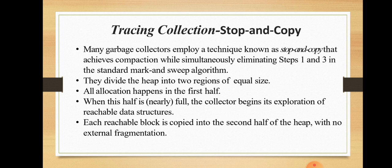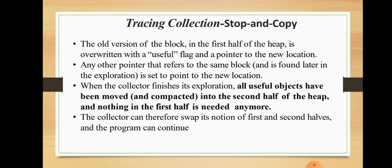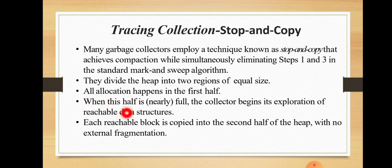In stop-and-copy, we divide the heap into two equal regions. All allocation happens in the first half, meaning all allocations are completed in the first half, while the second half remains unused. When the first half is full or nearly full, the collector begins its exploration of reachable data structures.